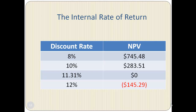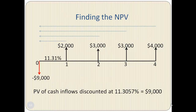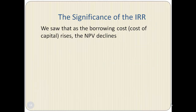In this example, the IRR is 11.31%. In other words, if we discount each cash flow to T equals zero at 11.31% and add them all up, they would add up to $9,000.